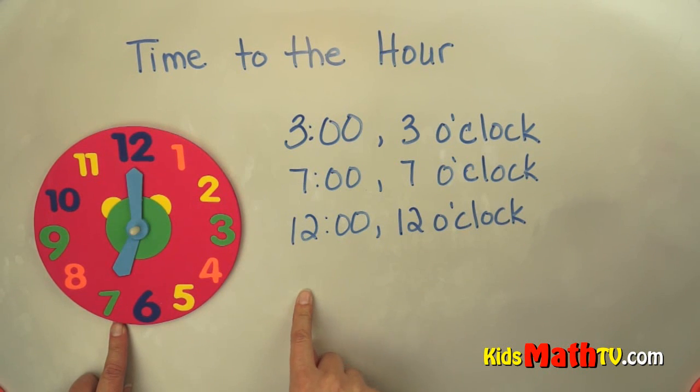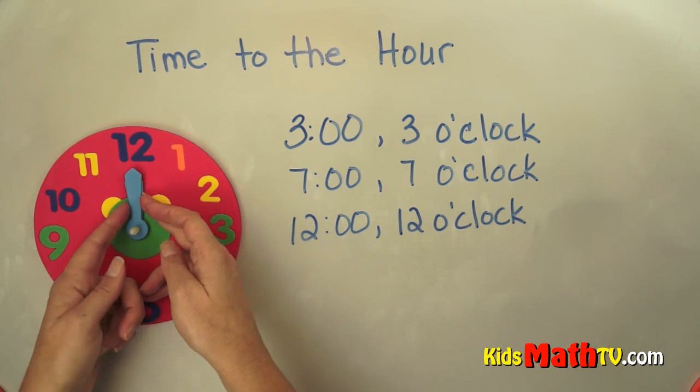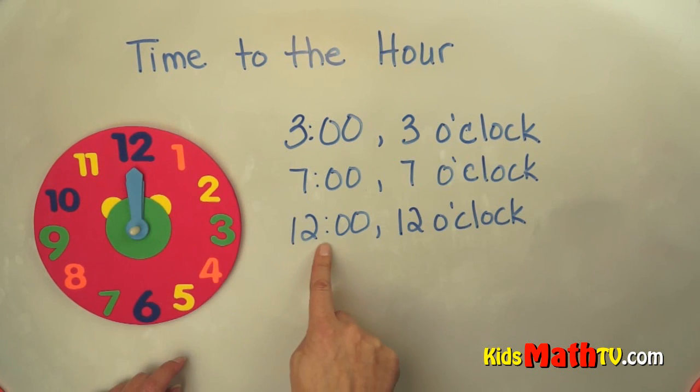12 o'clock is a little bit tricky. 12 o'clock is when both the little hand and the big hand are pointing straight up. The little hand, the hour, is on the 12 and o'clock is straight up.